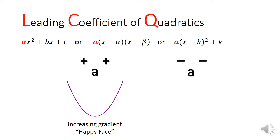Likewise, when a is negative, we get a quadratic curve with a decreasing gradient and we remember this with a picture of a sad face.